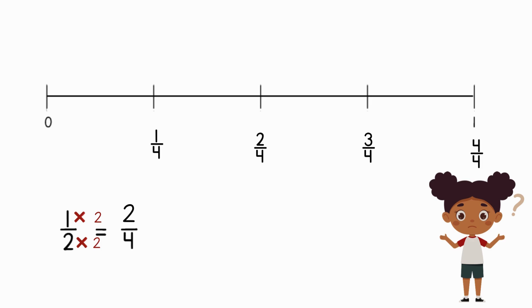One half is equal to two fourths, so we can plot one half on the number line in the same spot as two fourths. Pretty cool, right? The trick is to find a fraction that is equivalent to a fraction on the number line.